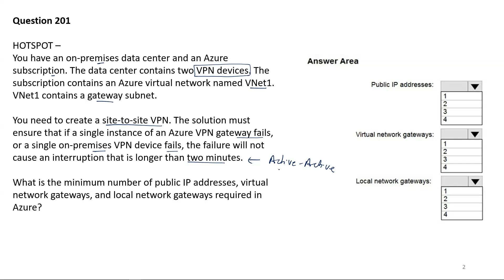That means we are looking for active-active VPN connectivity from both ends. The question is: what is the minimum number of public IP addresses, virtual network gateways, and local network gateways required in Azure?